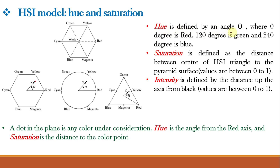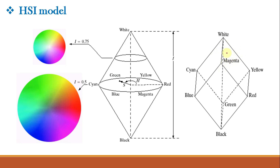Hue is defined by an angle theta, where 0° is red, 120° is green, and 240° is blue. Saturation is defined as the distance between the center of the HSI triangle and the pyramid surface, with values between 0 and 1. Intensity is defined by the distance up the axis from black, also with values between 0 and 1. The same RGB color cube can be represented in pyramid or triangular form.